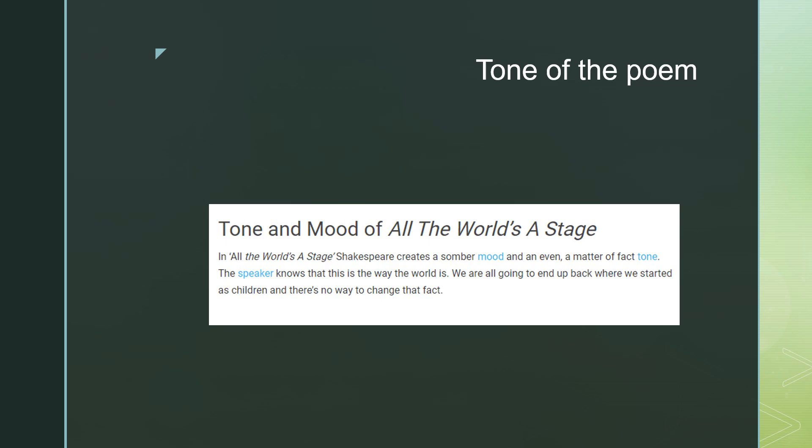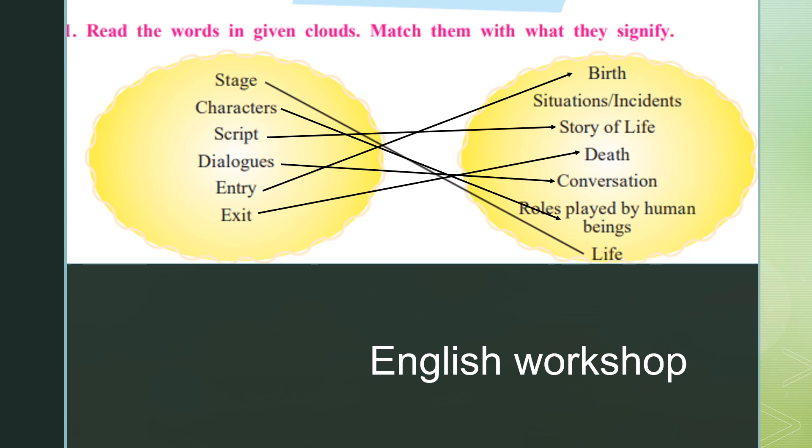The poem 'All the World's a Stage' written by Shakespeare creates a somber mood and a factual tone where the speaker knows that this is the way of the world — we are all going to end up back where we started, as a child, and there is no way to change it. That is why all facts are mentioned in the poem. Now, read the words in the given cloud and match them to what they signify: stages signifies life; characters are roles played by human beings; script means story of life; dialogues is a conversation between two human beings; your entry is birth and your exit is death.